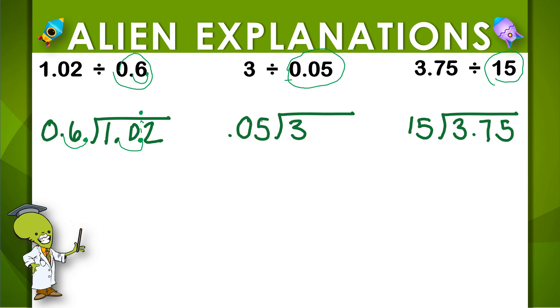In this example, I have 5 hundredths. How can I make 5 hundredths a whole number? Well, if I want to get this decimal point to move two places, I could multiply 5 hundredths by 100.